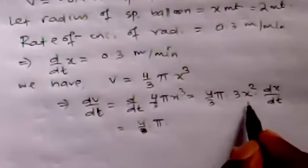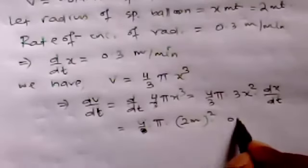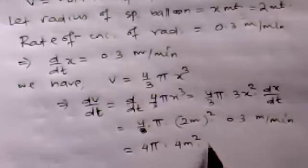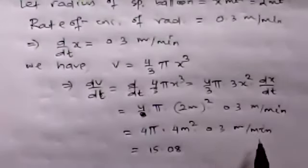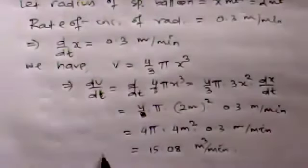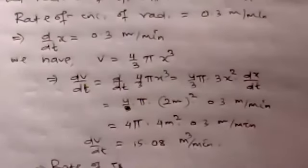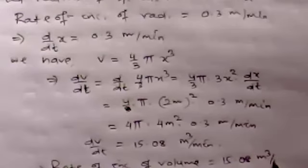Substituting the values: x = 2 meters, so x² = 4 m², and dx/dt = 0.3 meters per minute. This gives dV/dt = 4π × 4 × 0.3 = 4.8π cubic meters per minute. The rate of increase of the volume of the spherical balloon is 15.08 cubic meters per minute.